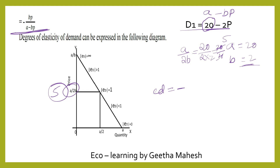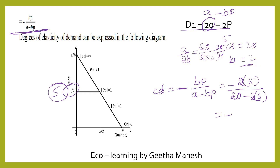Now substitute into the elasticity equation: elasticity equals minus BP divided by A minus BP. So that is minus 2 times 5 divided by 20 minus 2 times 5, which gives minus 10 divided by 20 minus 10, equals minus 10 divided by 10, equals minus 1. Taking the modulus — ignoring the sign — elasticity of demand equals 1. So at this price, elasticity of demand is equal to 1.